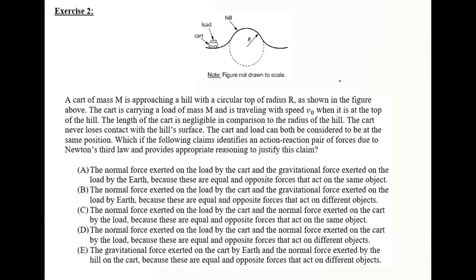Exercise 2: a cart of mass M approaches a hill with a circular top of radius R. The cart carries a load of mass M and travels with speed V₀ at the top of the hill. The length of the cart is negligible compared to the radius, the cart never loses contact with the surface, and the cart and load can be considered at the same position. Which claim identifies an action-reaction pair due to Newton's Third Law with appropriate reasoning?